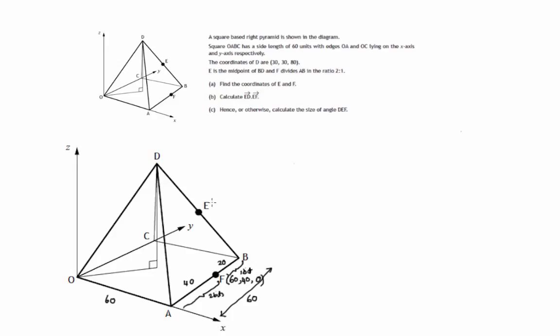Let's now attempt to get the coordinates of E. E is the midpoint of D, B. So to track down where E is, we should find D's coordinates. Fortunately we're told it's 30, 30, 80. And B's coordinates, in a similar way to how we found F, we go 60 units along the x-axis and then 60 units parallel to the y-axis to get to B. And again, it's a height of 0. So 60, 60, 0. And E is the midpoint of line DB.